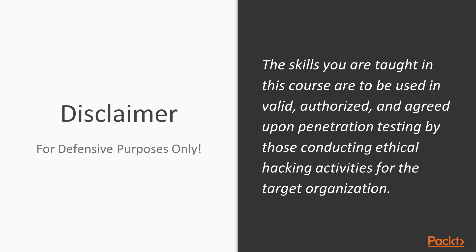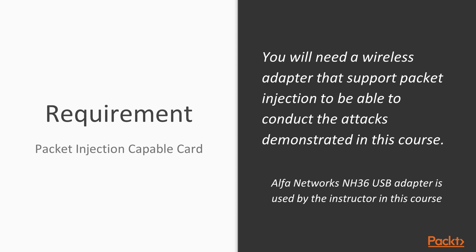Make sure you're doing things ethically and within the bounds of the law. The second requirement is a packet injection capable card. Before you can conduct these attacks, you must have a wireless adapter that supports packet injection, and it also needs to be supported by Kali Linux. The card I'm going to use in this course is called the Alpha Networks NH36 USB adapter. They run about $30 to $40 online — you can find them at Newegg, Amazon, eBay, or any other online retailer. They are an excellent card that a lot of penetration testers use in the field because they're reliable and they work well. You don't have to have this particular card, but you do need one that is recognized by Kali and supports packet injection.